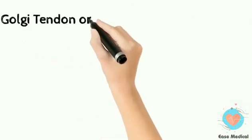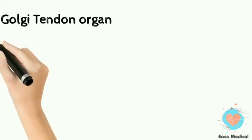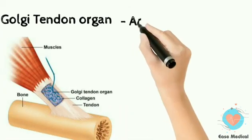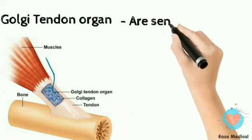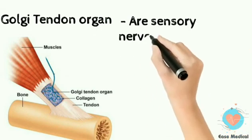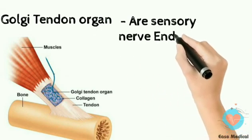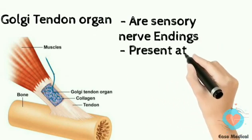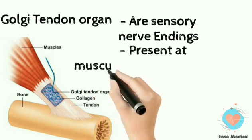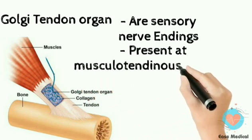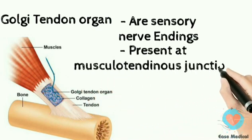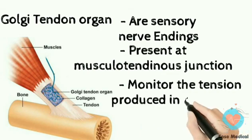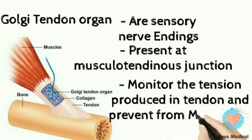The Golgi tendon organ consists of sensory nerve endings present at the musculotendinous junction. They monitor the tension produced in the tendon and prevent it from mechanical damage.